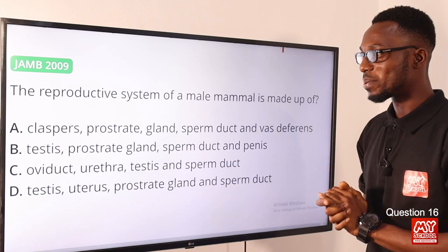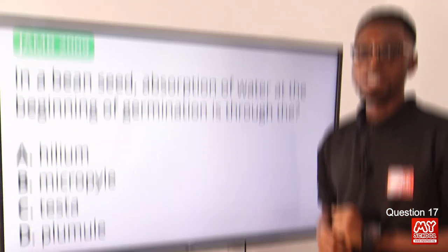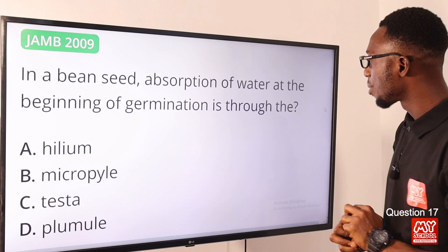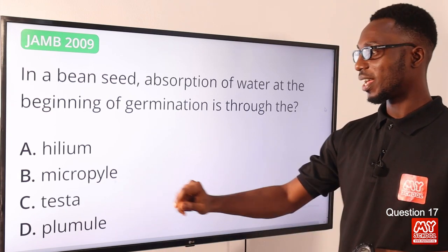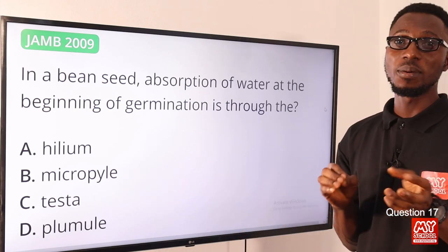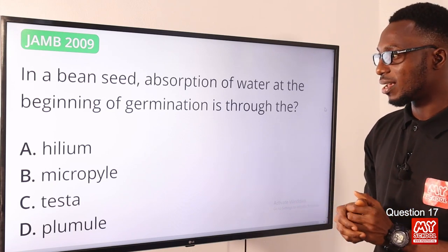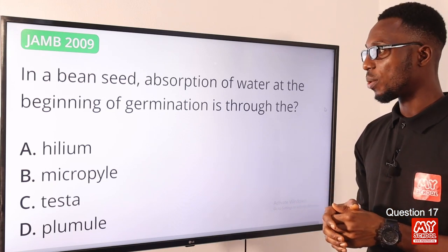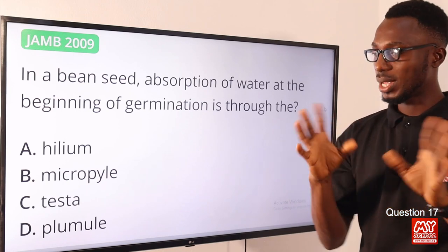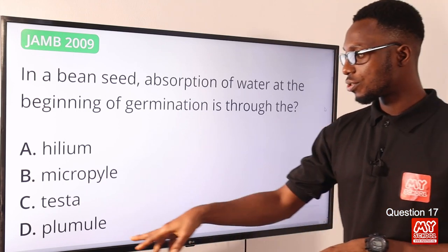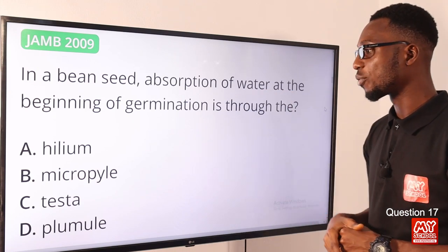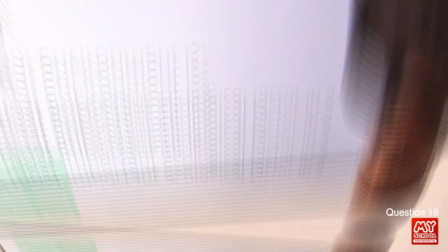Question seventeen: in a bean seed, absorption of water at the beginning of germination is through the micropyle. The micropyle also serves as the opening for the pollen tube to reach the ovule for fertilization. The hilum is the scar of attachment; the testa is the seed coat for protection; the plumule is the embryonic shoot. The correct option is option B — micropyle.